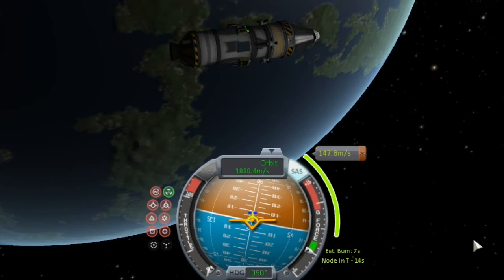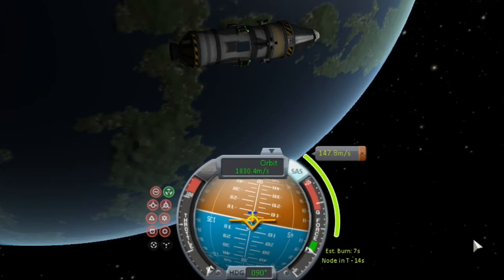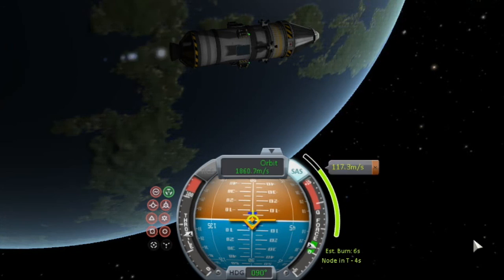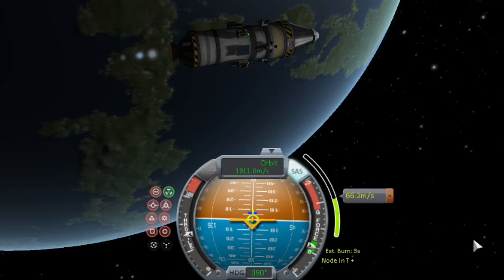And looking back at the video, we actually see that the burn was 148 meters per second. A little off, but that's what often happens. The formulas assume that both the initial and final orbits are perfectly circular. My initial orbit in particular was pretty ugly. So that can throw things off from theory. Always budget a bit more than what the formulas give you.